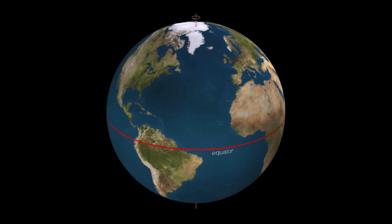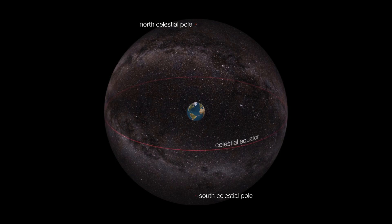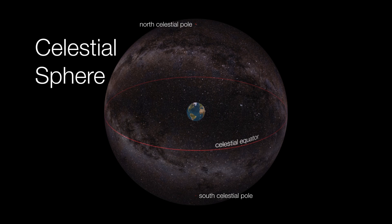Going back to the idea of the celestial sphere: let's take the Earth's poles and project them onto the sky, giving us the north and south celestial poles. We take the Earth's equator and project that onto the sky, giving us the celestial equator. This, in total, is the celestial sphere. Now we know that stars are not really imprinted on an actual sphere, but it's a useful fiction — it allows us to identify positions of stars in the sky and to understand their apparent motion around us.